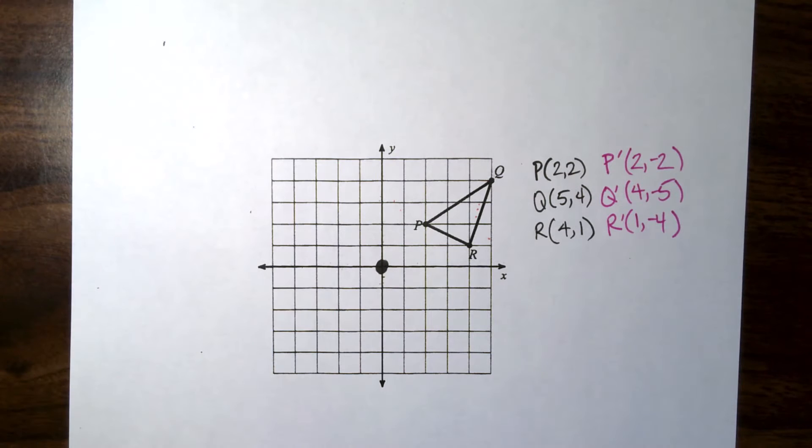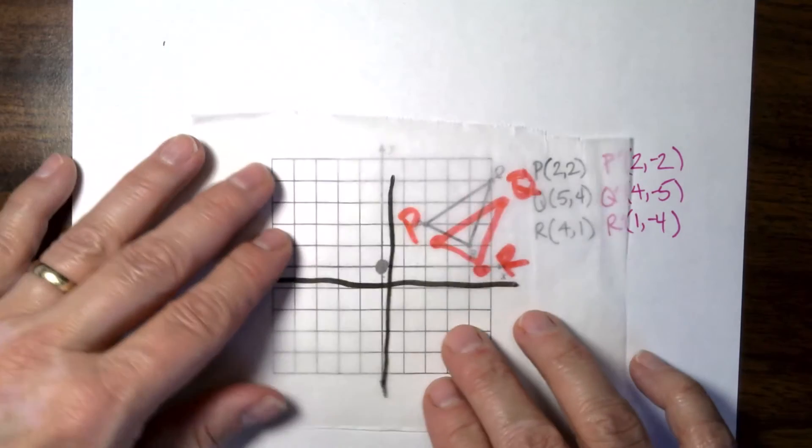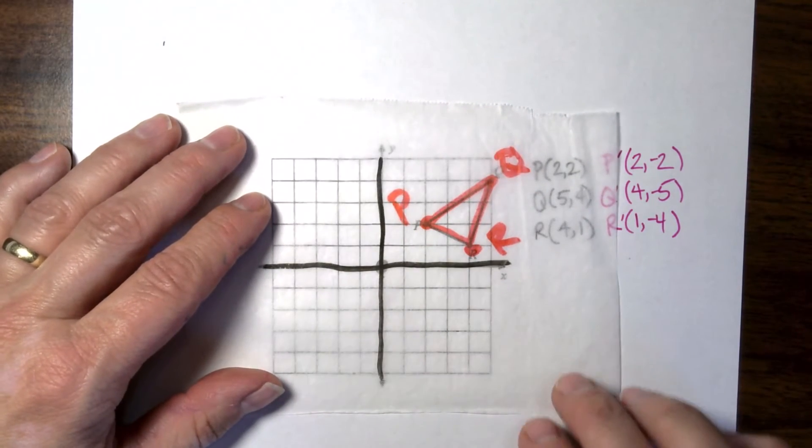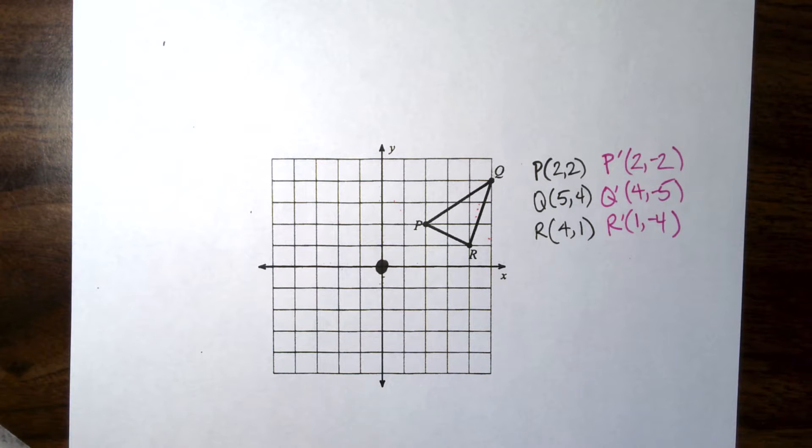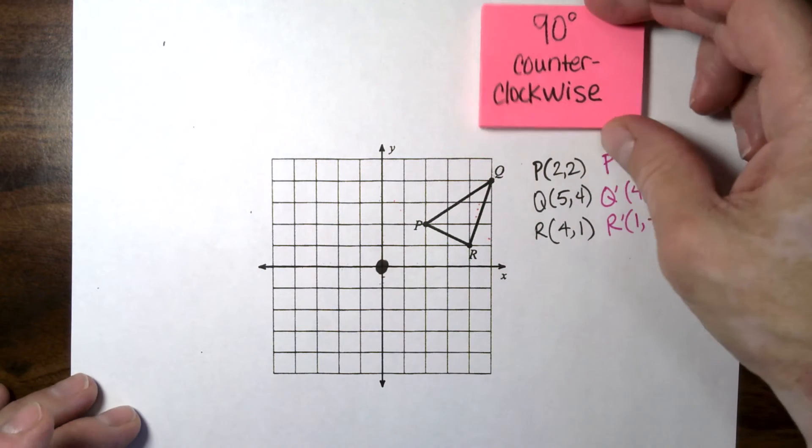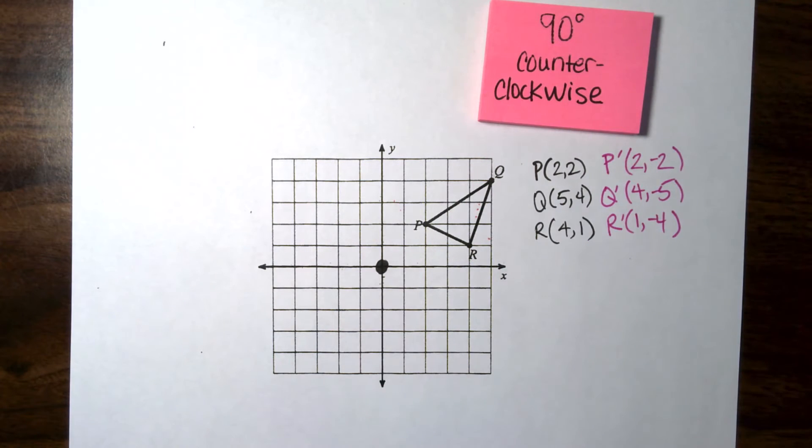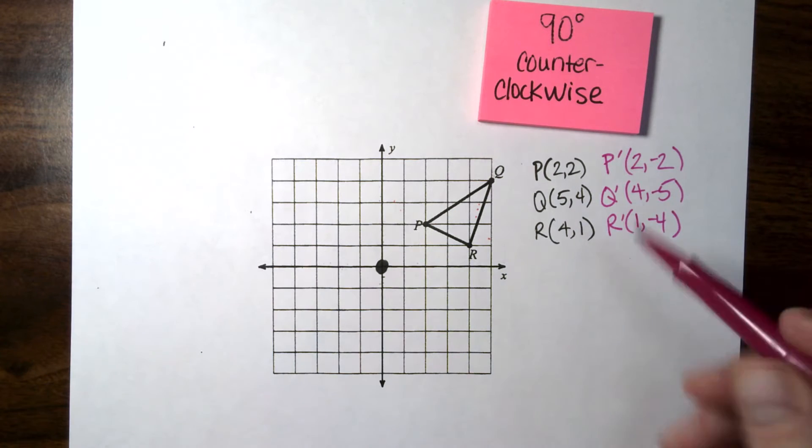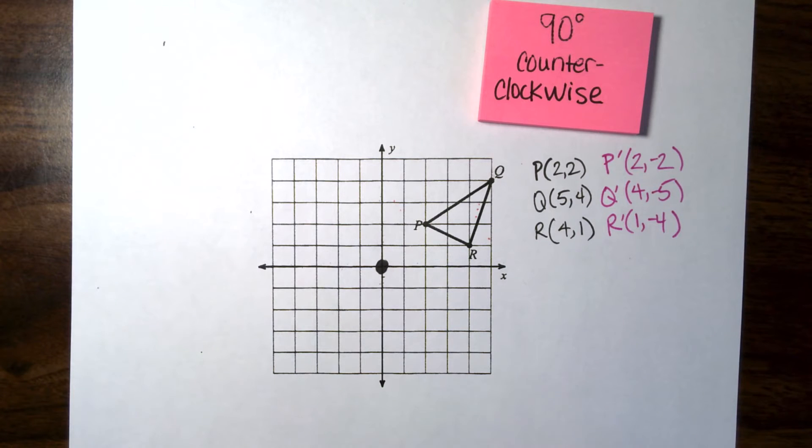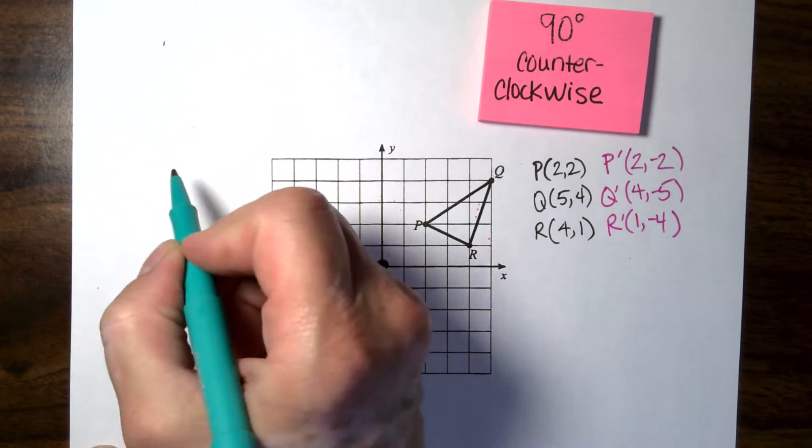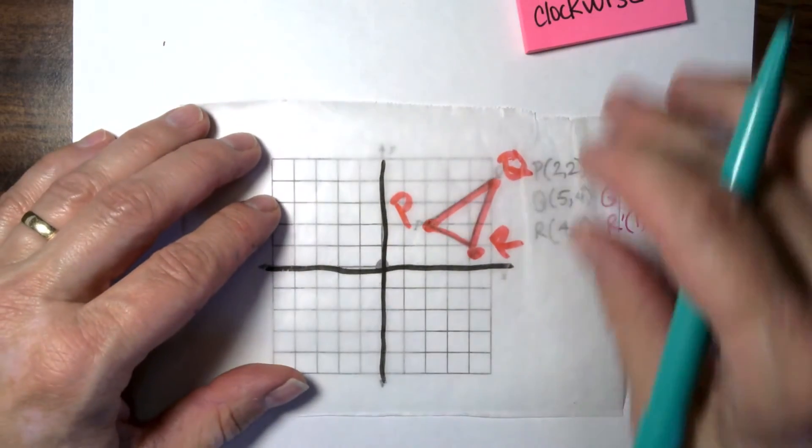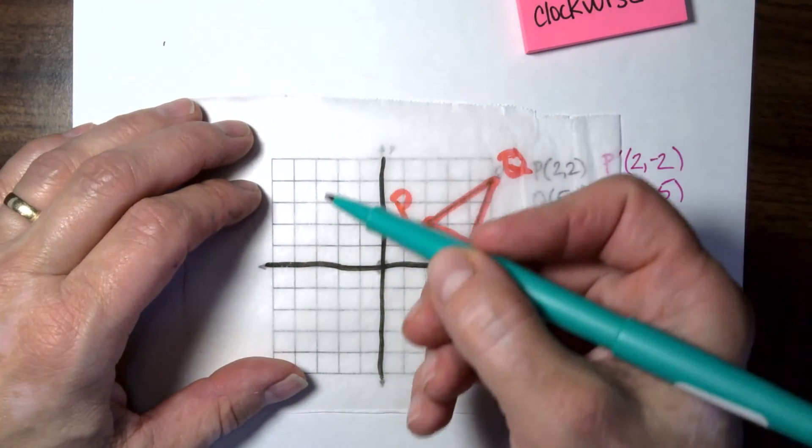All right, let's do it again. I want to use the same diagram, and I'm going to use the same thing. It's just that I am going to do a new problem. And this time, I want to go 90 degrees counterclockwise. And for this one, I am going to change this notation and change color of my marker.